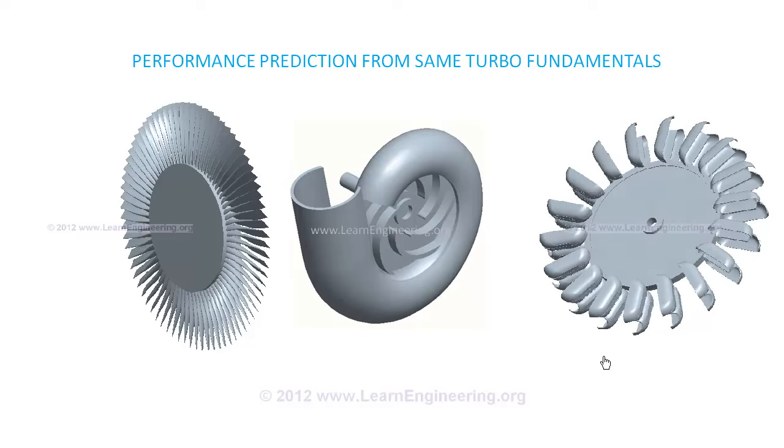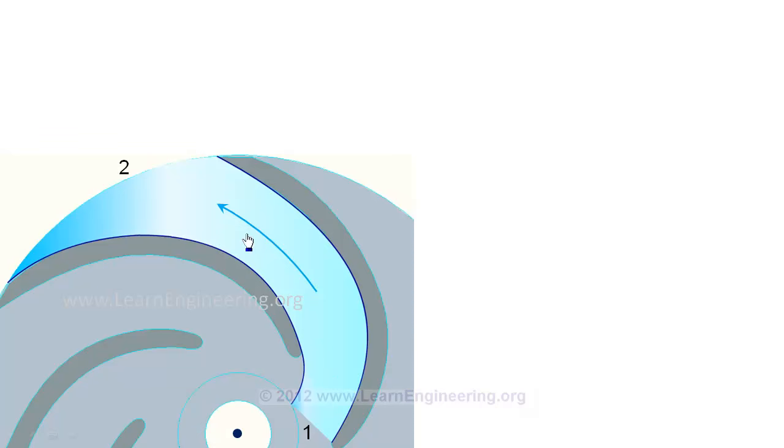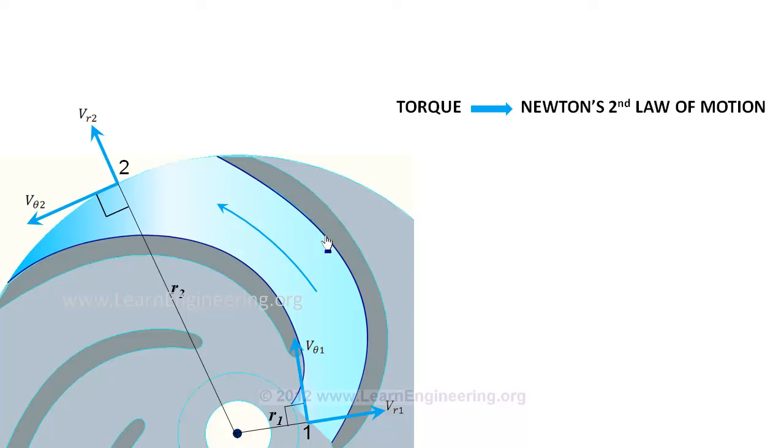To develop turbomachinery fundamentals, consider fluid flow through this channel. The inlet velocity V1 gets changed to outlet velocity V2. Velocity of fluid can be split into tangential and radial components. In order to make the fluid flow, there should be an external torque acting on it. This torque can be derived from Newton's second law of motion, which acts as the fundamental equation of turbomachinery.